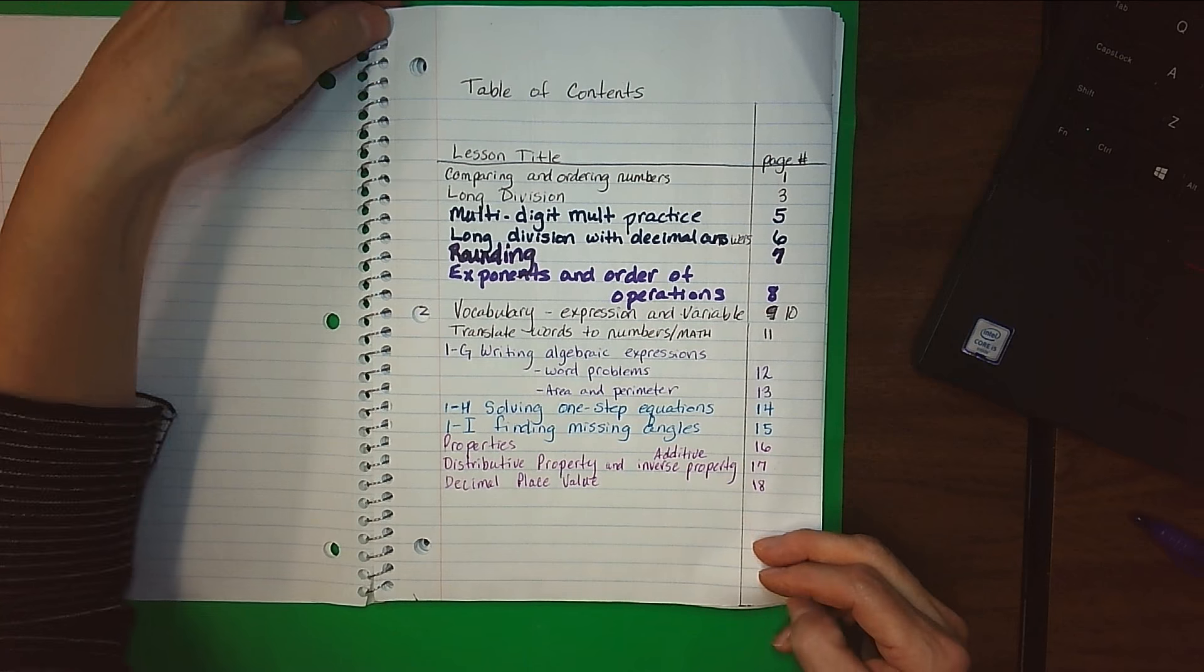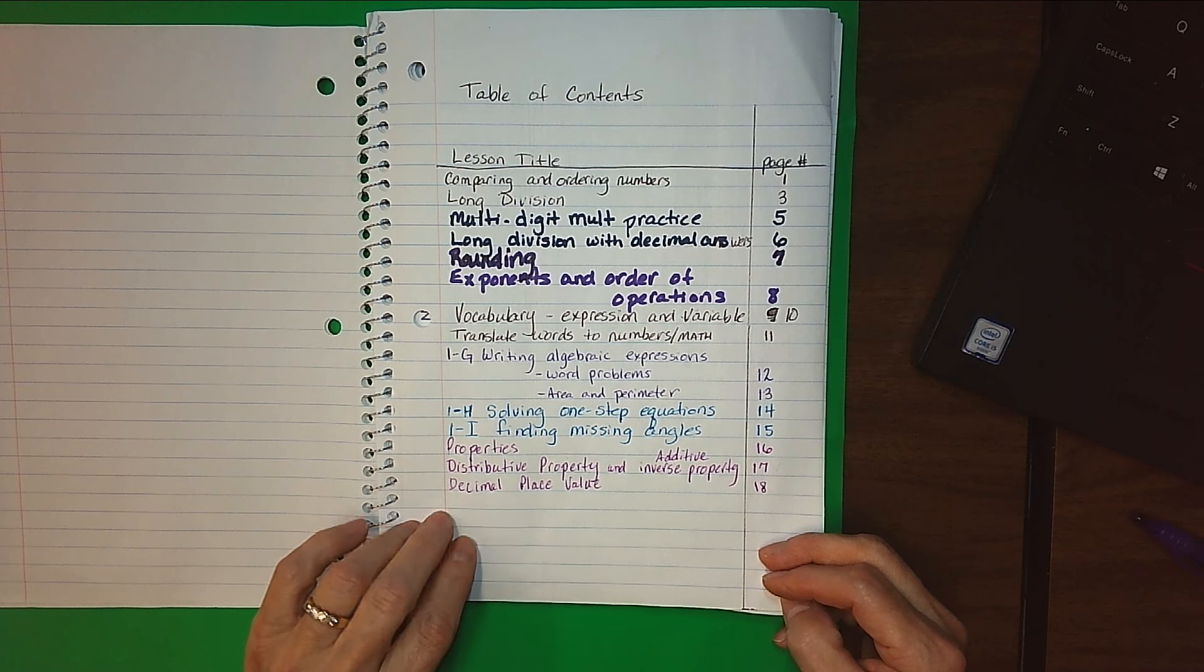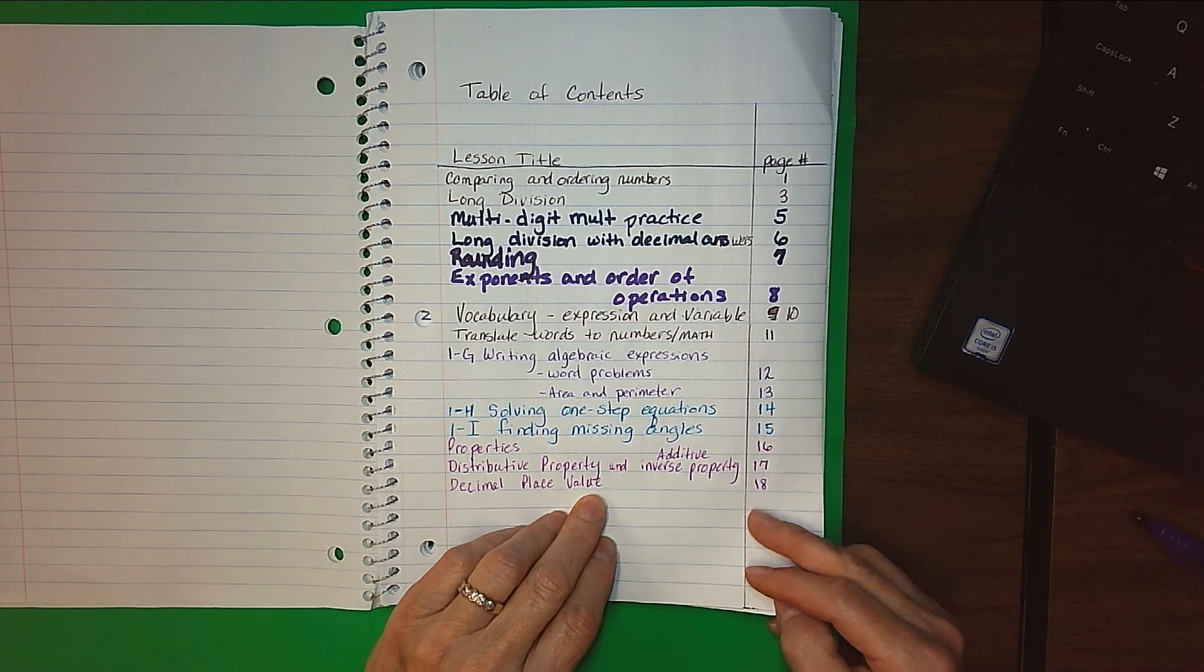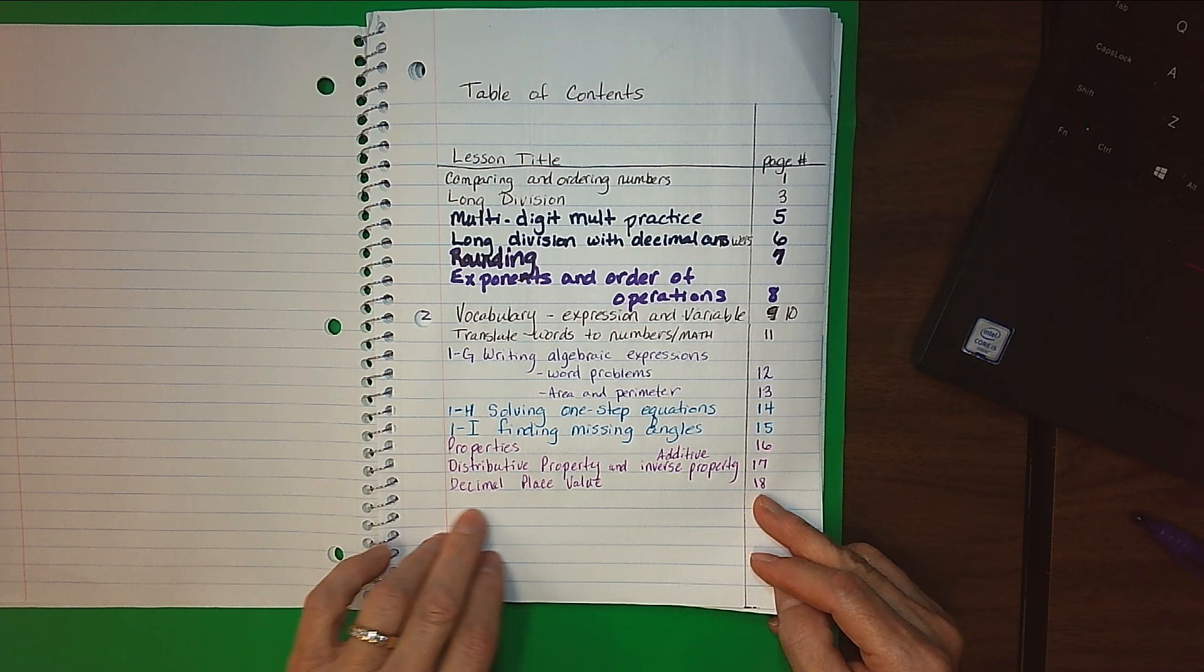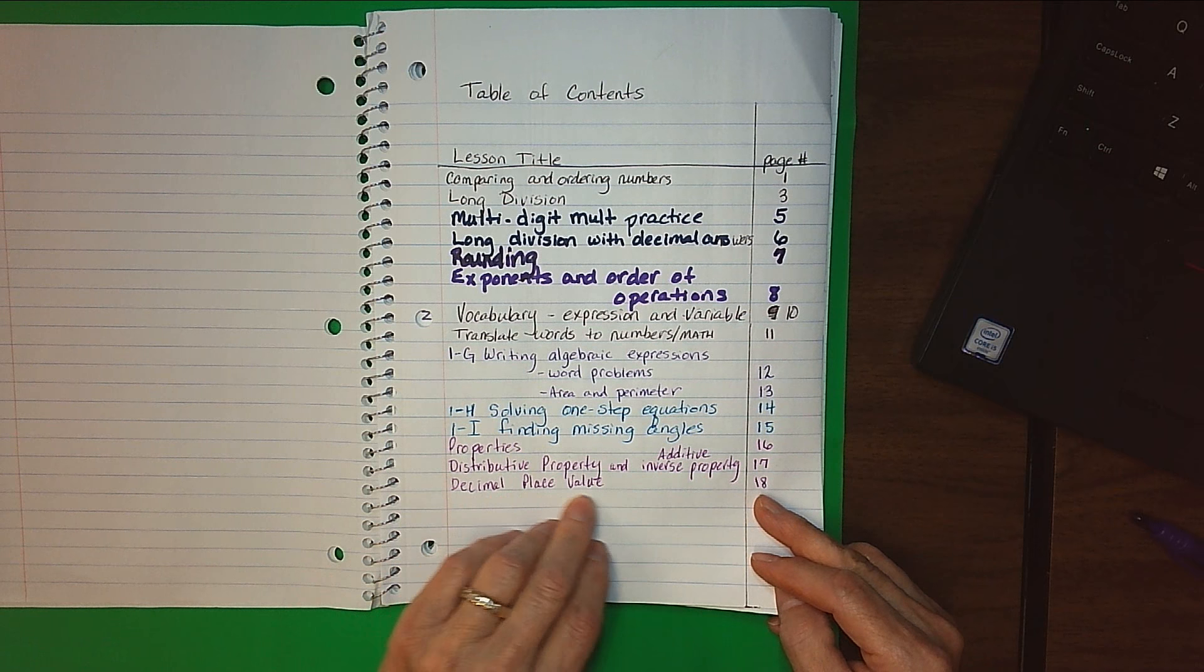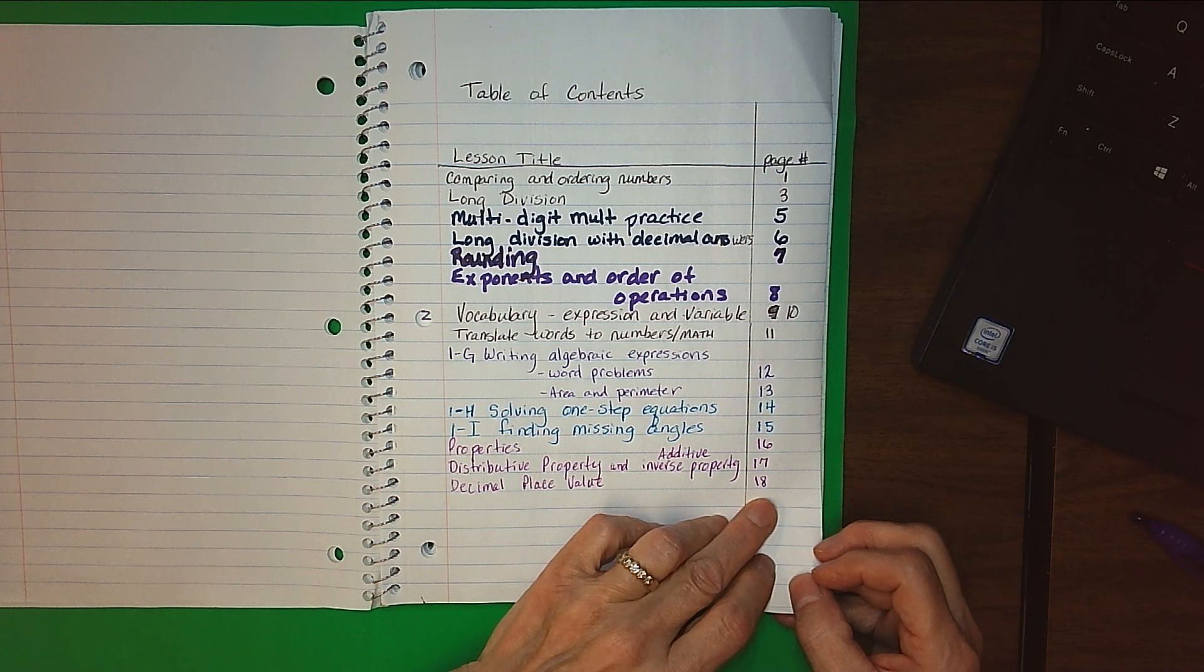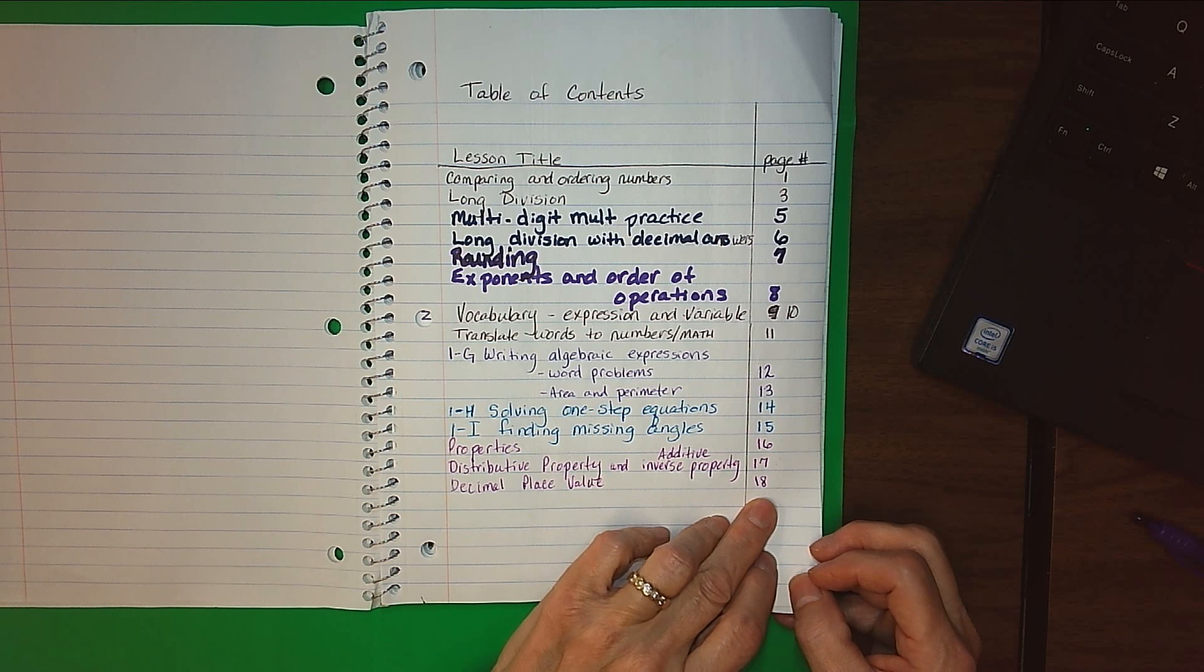Hi ladies and gentlemen. Today our goal is to learn to identify decimal place value. The first thing I've done is put that decimal place value into my table of contents and labeled it with the number of the page that I will place my notes on.